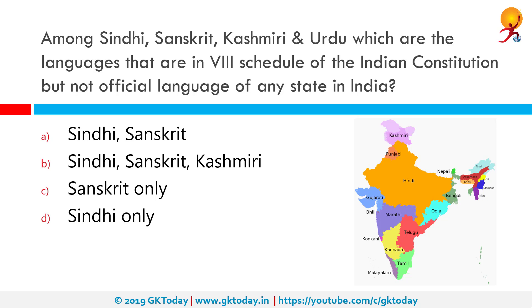Among Sindhi, Sanskrit, Kashmiri, and Urdu, which are the languages that are in the 8th Schedule of the Indian Constitution but not the official language of any state in India? The correct answer is Sindhi, Sanskrit, and Kashmiri. The Constitution of India designates the official language of the Government of India as Hindi written in Devanagari script as well as English. There is no national language as declared by the Constitution of India. States within India have the liberty and powers to specify their own official languages through legislation, and therefore there are 22 officially recognized languages in India, of which Hindi is the most used.